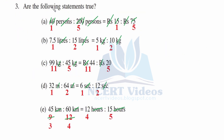Question 3: Are the following statements true? Part a: 40 persons is to 200 persons equals rupees 15 is to 75. We check proportionality — cancel persons with persons and zeros with zeros: 4 ones are 4 and 5 fours are 20. Then 15 ones are 15 and 5 fifteens are 75. Therefore 1 is to 5 in both cases — the statement is True.